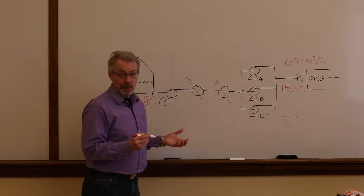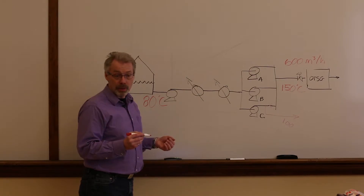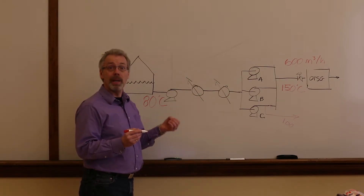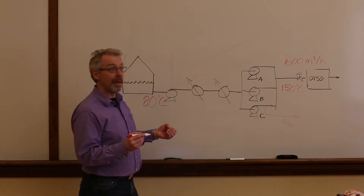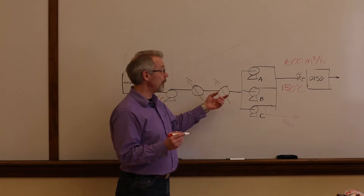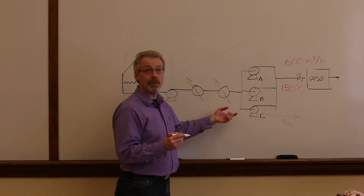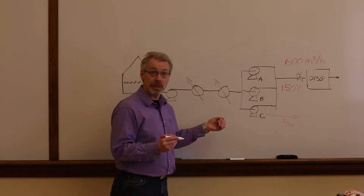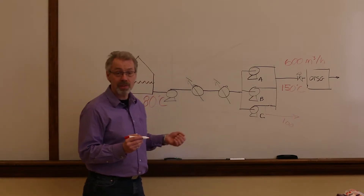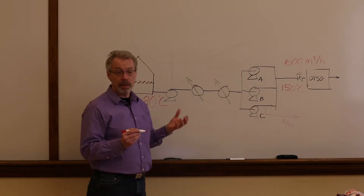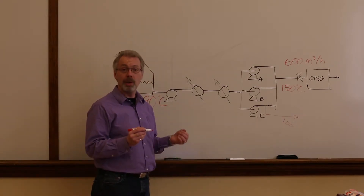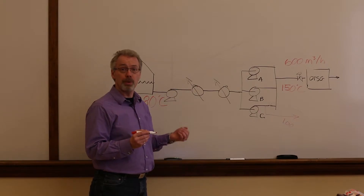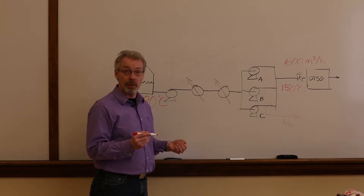Since the amount of heat recovered is constant, this means the temperature rise has gone down. So rather than having a temperature rise of 70 degrees, the temperature rise is now only 60 degrees. Thus, starting the third pump causes the temperature of the boiler feed water to drop by 10 degrees.